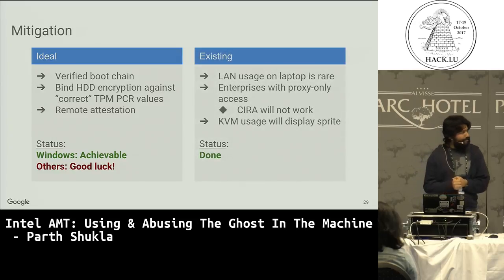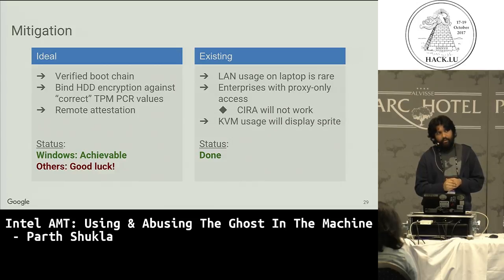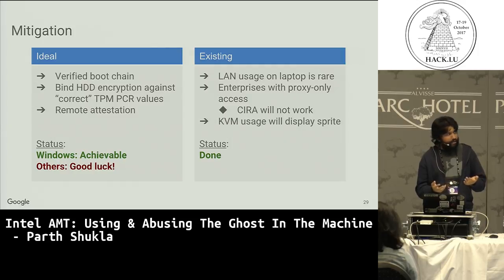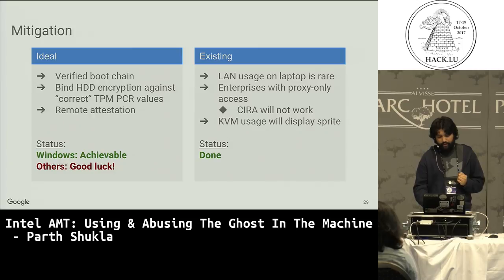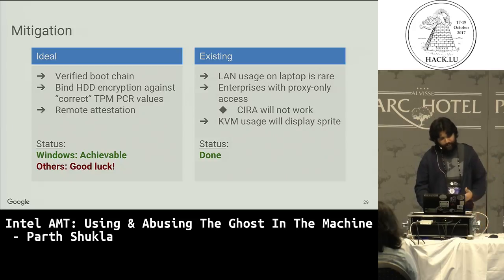Existing mitigations already in place for most people: not many people use LAN regularly, so Wi-Fi limitations are imposed on AMT. Some enterprises only allow internet access through a proxy — CIRA doesn't work over just a proxy, you need a more direct internet connection. When using KVM, attackers can try to avoid using it when they think people might be using the machine — at night, for example. But there's always the possibility of user discovery.